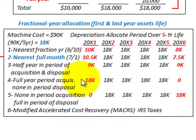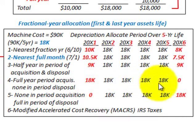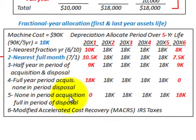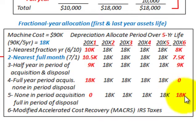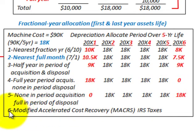Method 4 — Full year in the period of acquisition and none in the period of disposal: Everything gets allocated to the first year — 20x1 gets $18,000 and 20x6 gets $0. Method 5 — None in the period of acquisition but the full amount in the period of disposal: 20x1 gets $0 and 20x6 gets $18,000. In both cases the total remains $18,000.